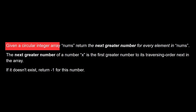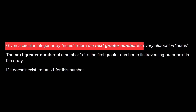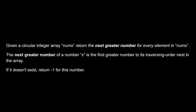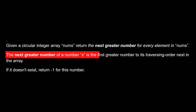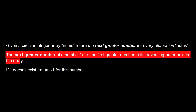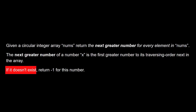LeetCode problem 503, Next Greater Element II, is a medium problem. Given a circular integer array called nums, return the next greater number for every element in nums. The next greater number of a number x is the first greater number to its right in traversal order. If it doesn't exist, return -1.